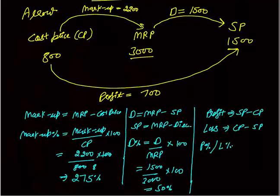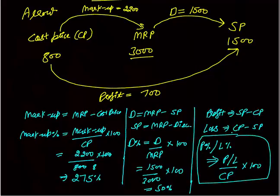Profit percent or loss percent, unless given otherwise, is always calculated on the cost price. That is profit or loss upon cost price into 100. This is the profit and loss basic formula. Profit and loss percent is calculated as profit and loss divided by cost price into 100.